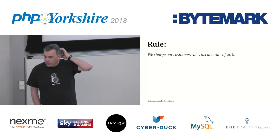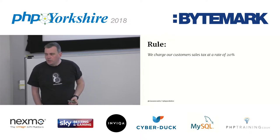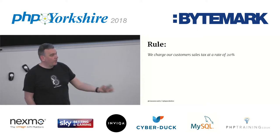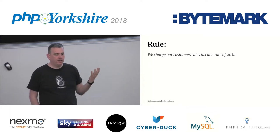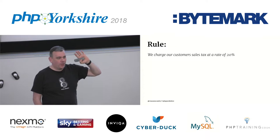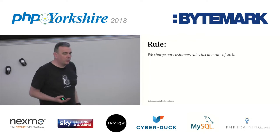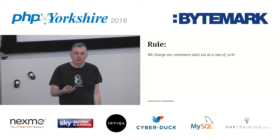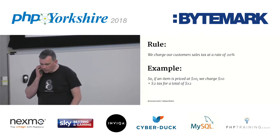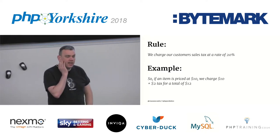Here's an example of a business rule: we charge our customers sales tax at a rate of 20%. You can argue some rules are really simple, really trivial and obvious — easy to understand. But even with a simple rule, it's worth having a conversation and asking for an example. So: if an item's priced at $10, we're going to charge $10 and $2 tax for a total of $12. Is that what everyone understood?